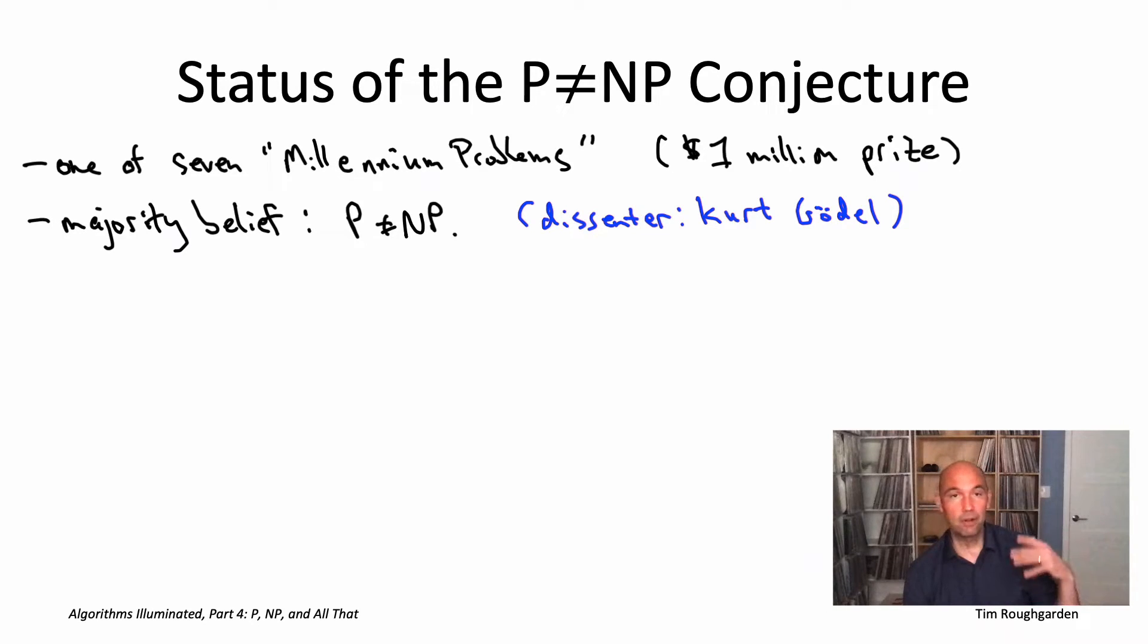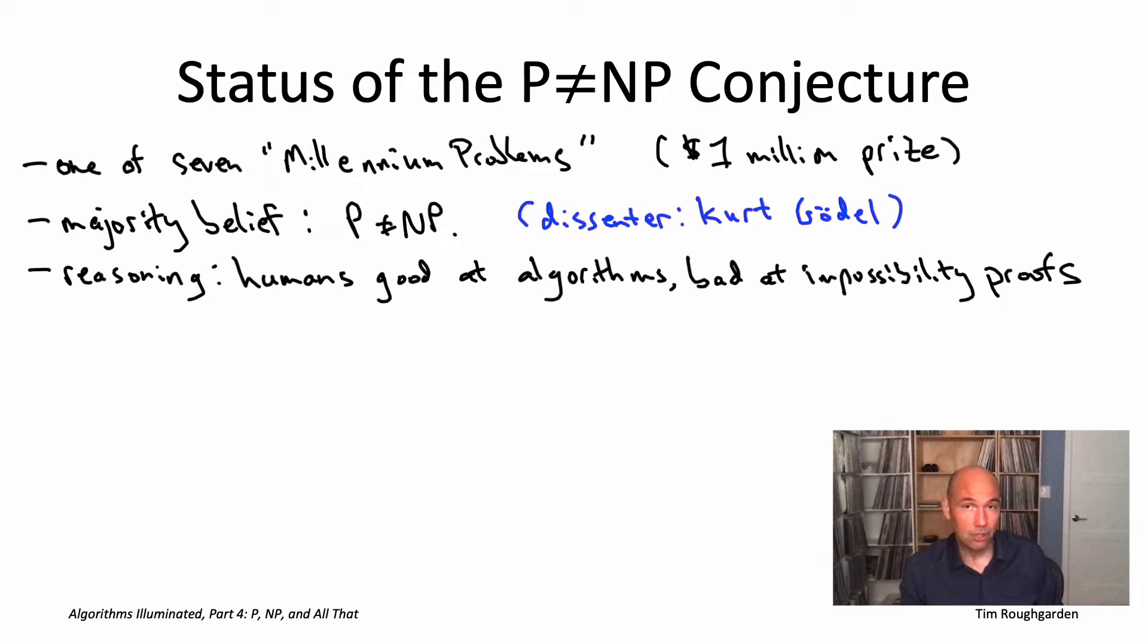Gödel aside, most experts - 90-some-odd percent - believe P is not equal to NP. Where does that belief come from? First, humans seem really crafty at coming up with efficient algorithms when they exist, and we've seen many examples in this book series. If there really was some efficient algorithm for something like the traveling salesman problem, it would be surprising that with all the human ingenuity in designing algorithms, we haven't figured that out. On the other hand, humans seem quite bad at proving impossibility results. So if P is different than NP, it's maybe not surprising we haven't figured out how to prove it.